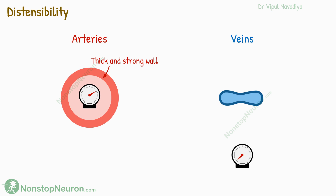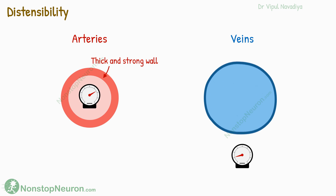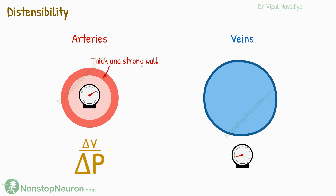On the other hand, the veins have thin walls. Moreover, at lower volumes, their lumen takes an ellipsoidal shape. So even with a small rise in pressure, the vein shows a huge distension. In short, the arteries show very small distension even over a large pressure increase, and veins show more expansion even with a small increase in pressure. So this was the second fundamental concept.